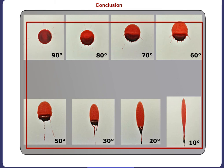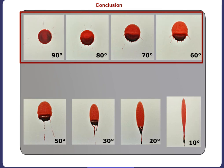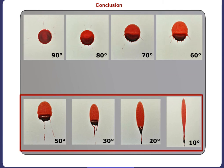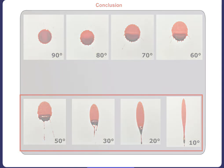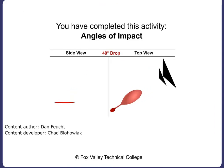As you can see in these images, the higher the angle of impact, the more circular the stain. Likewise, the lower the angle, the more elongated and elliptical the resulting stain will be. You have completed this activity, Angles of Impact.